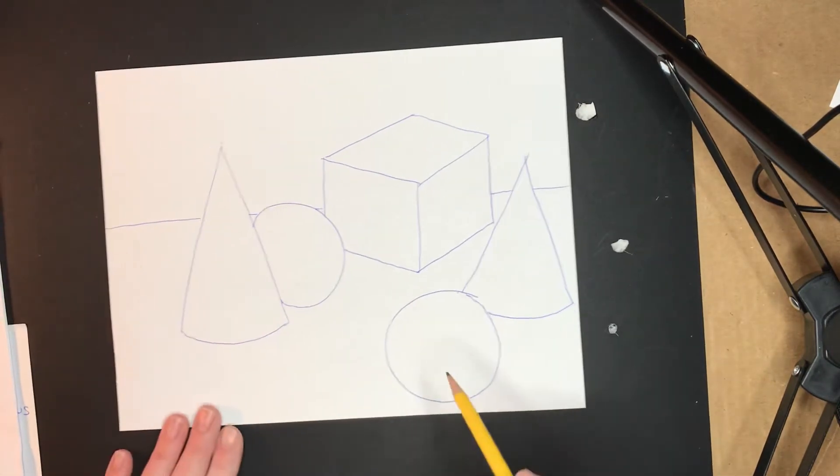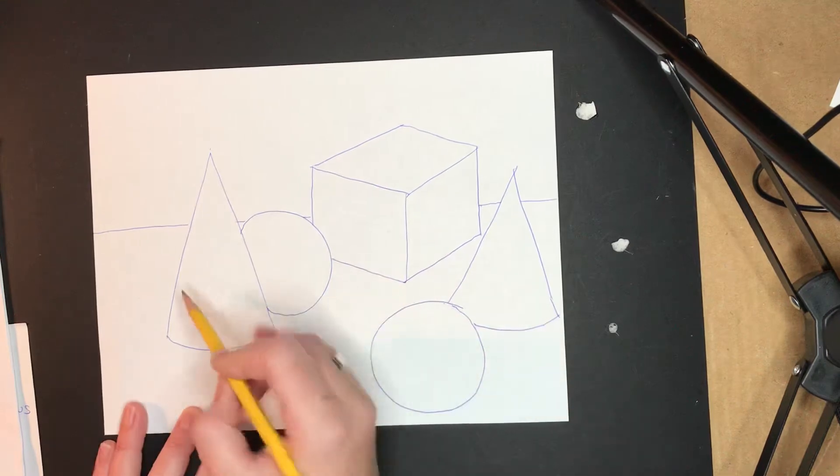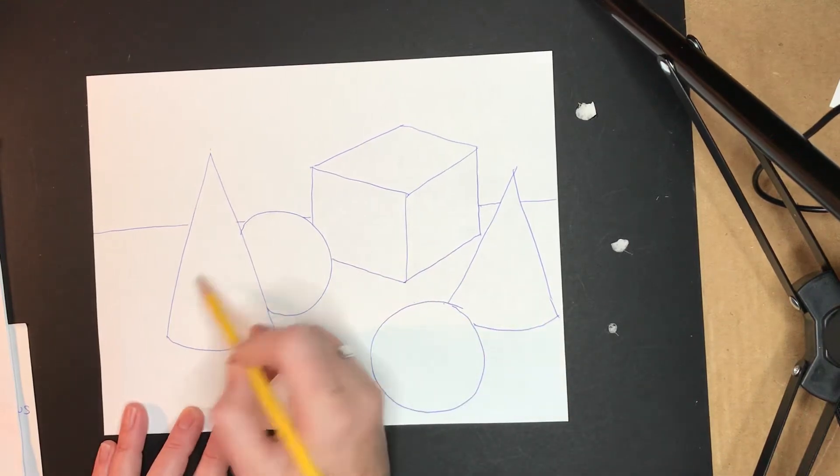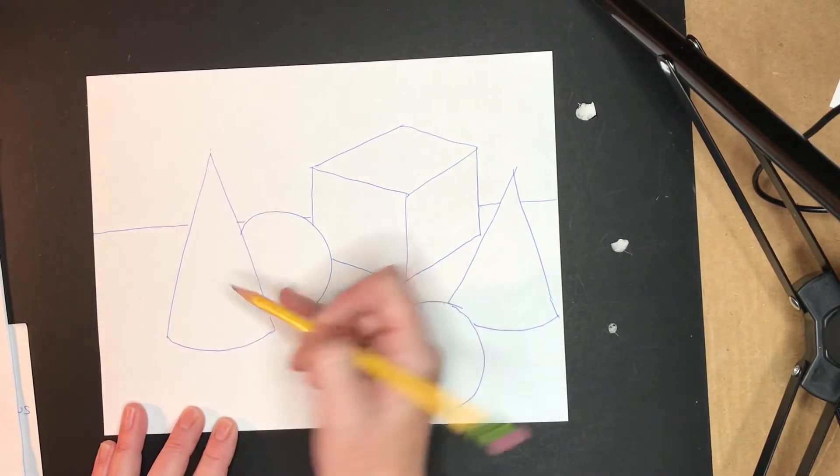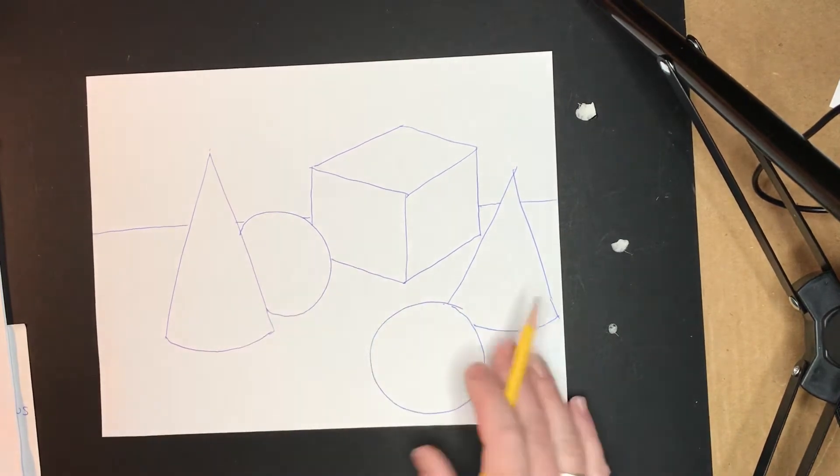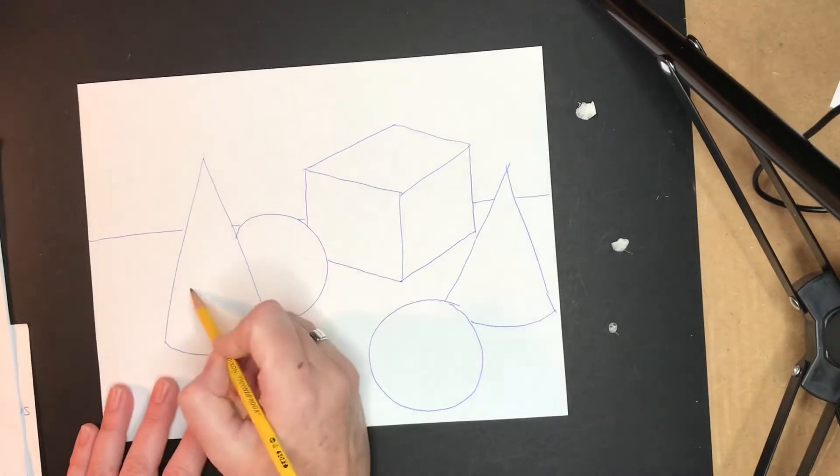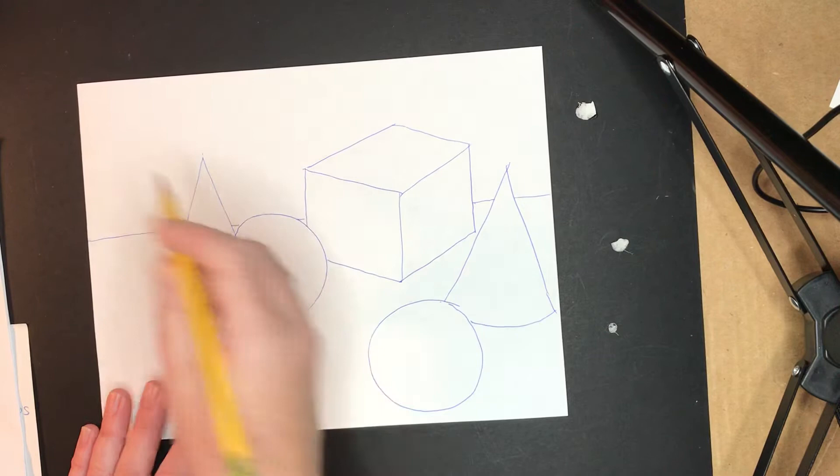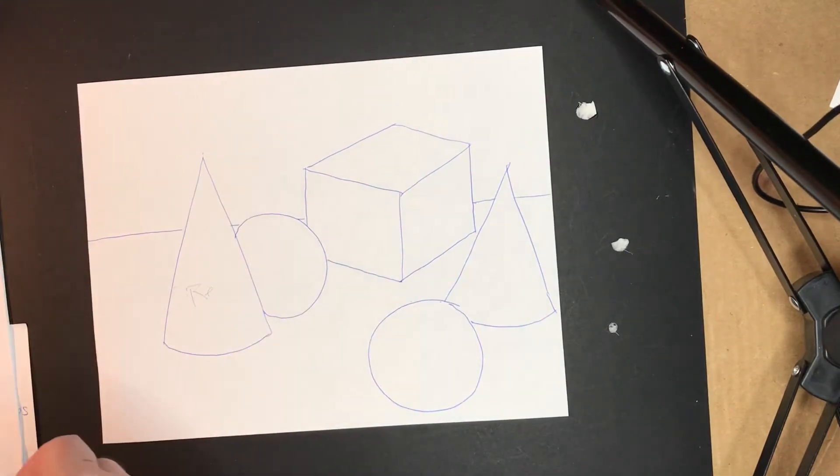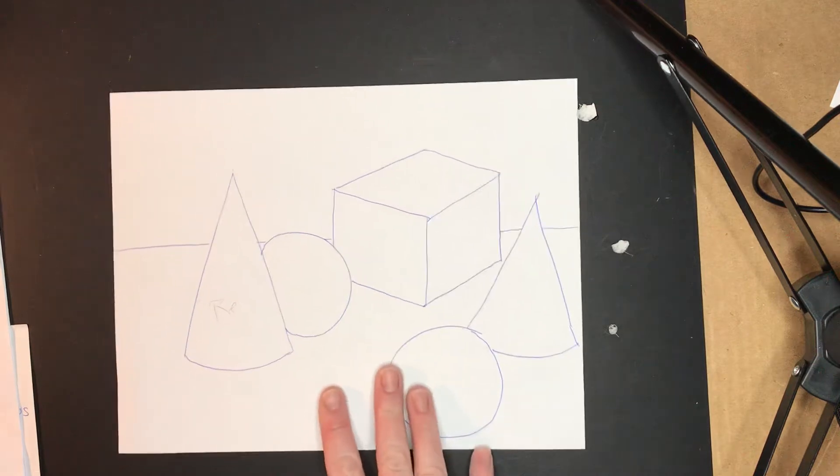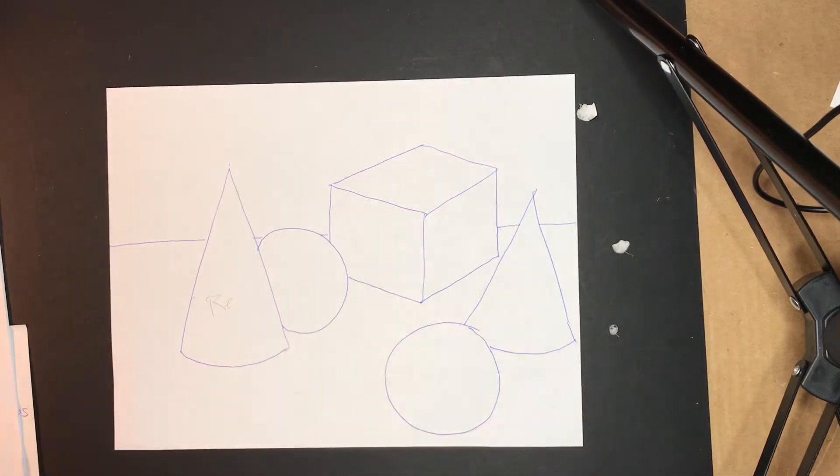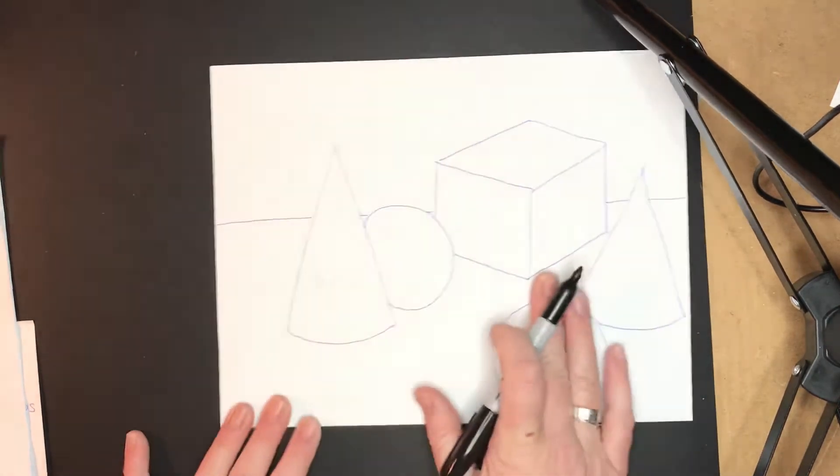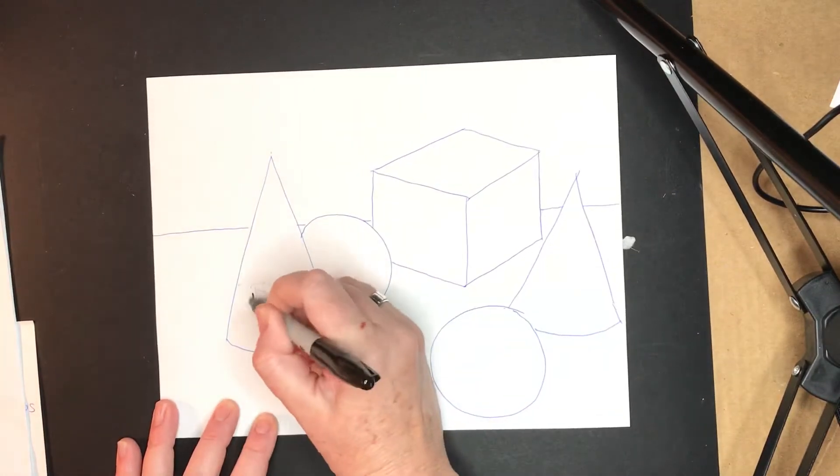Really lightly with your pencil, or you could even do this on your thumbnail if you want. I'm gonna draw on mine really big with a black Sharpie just so it shows up better on camera. So I'm gonna decide that this guy is gonna be red.